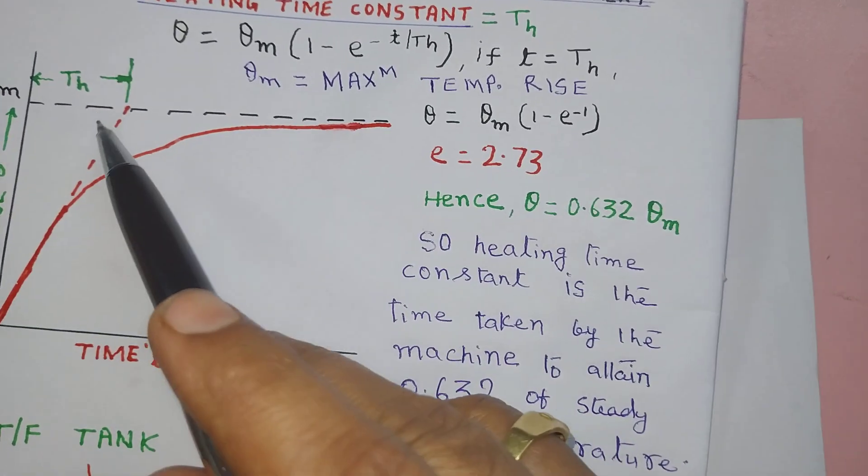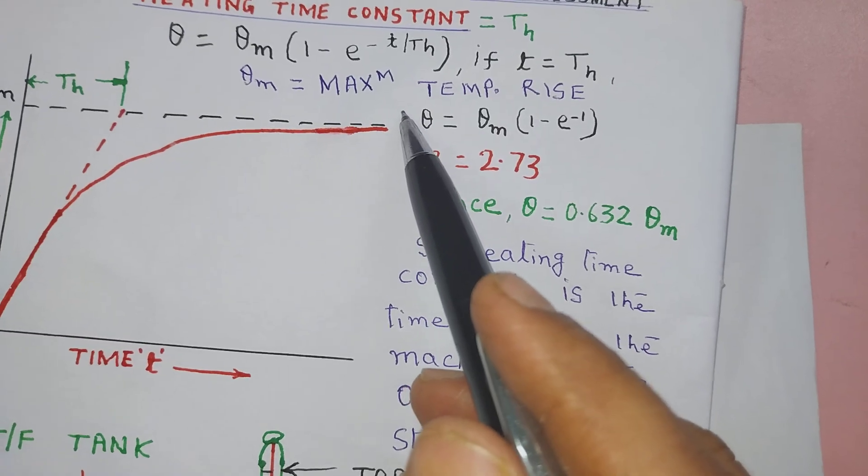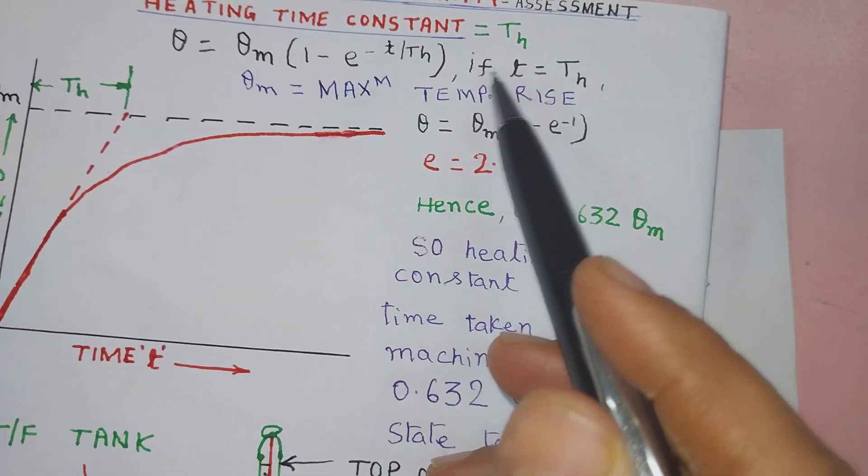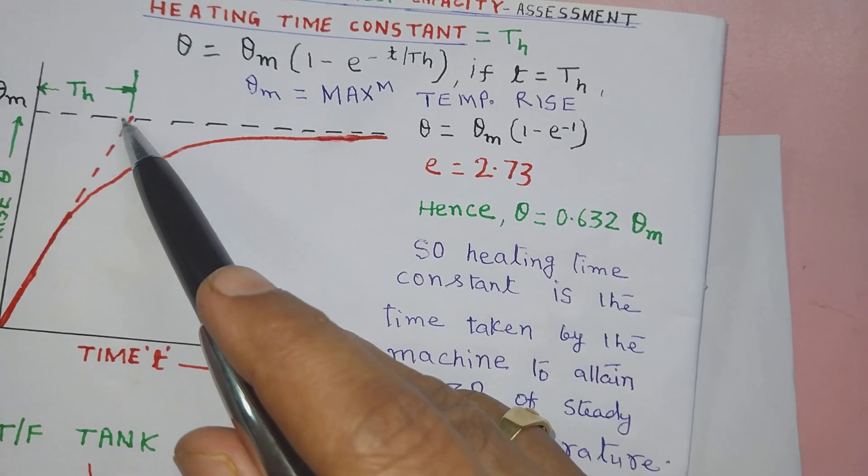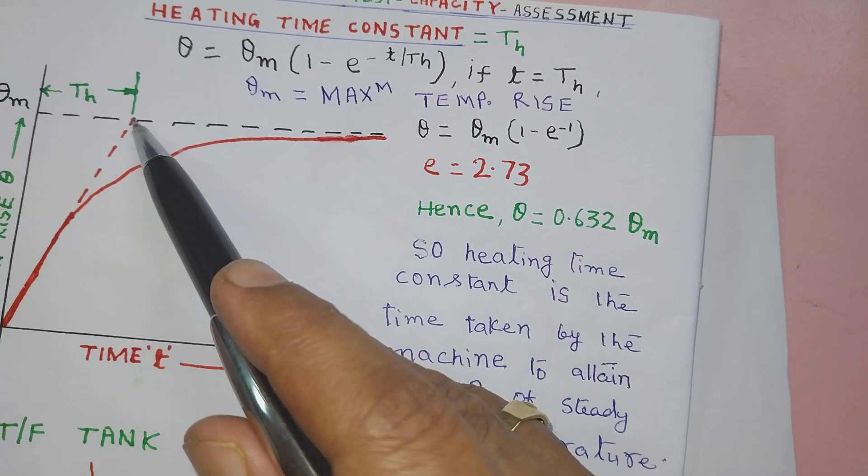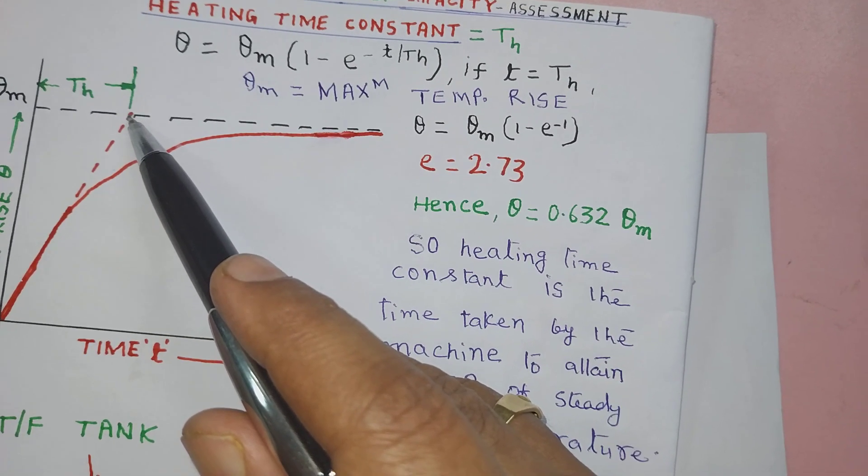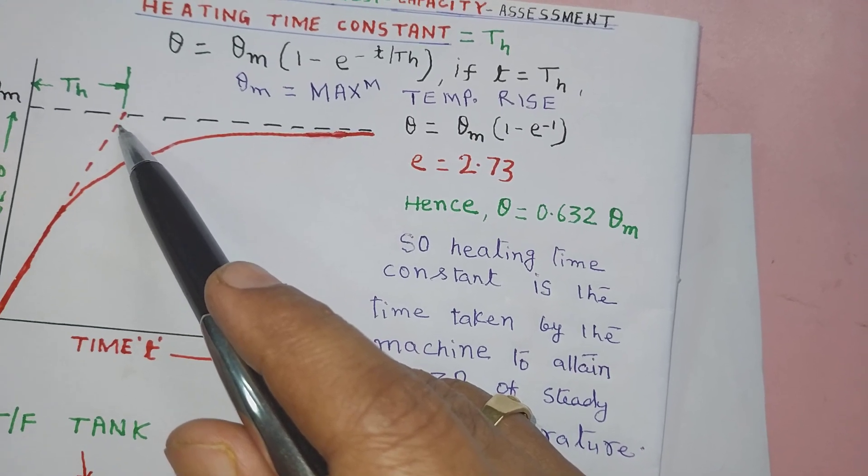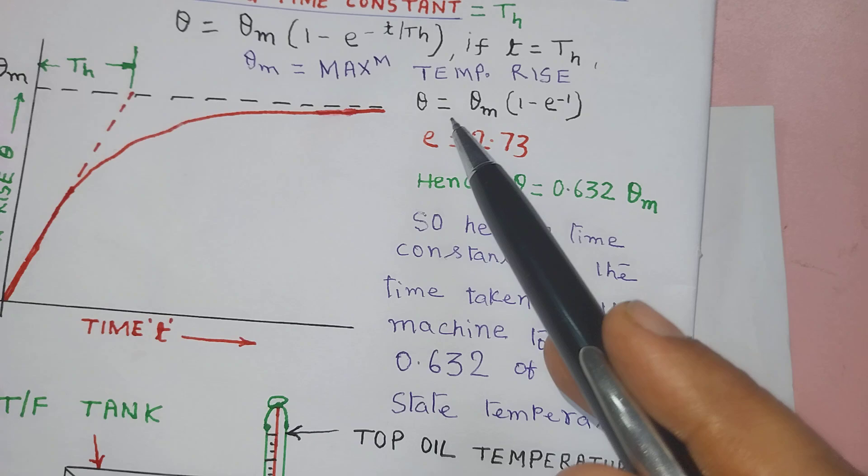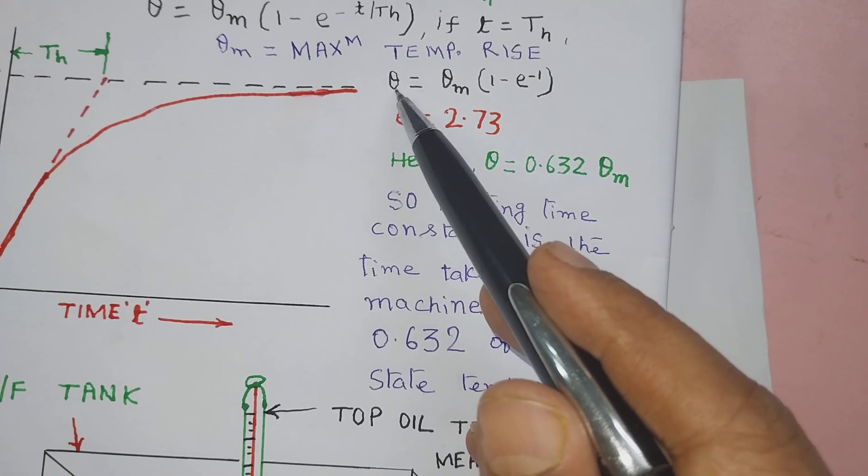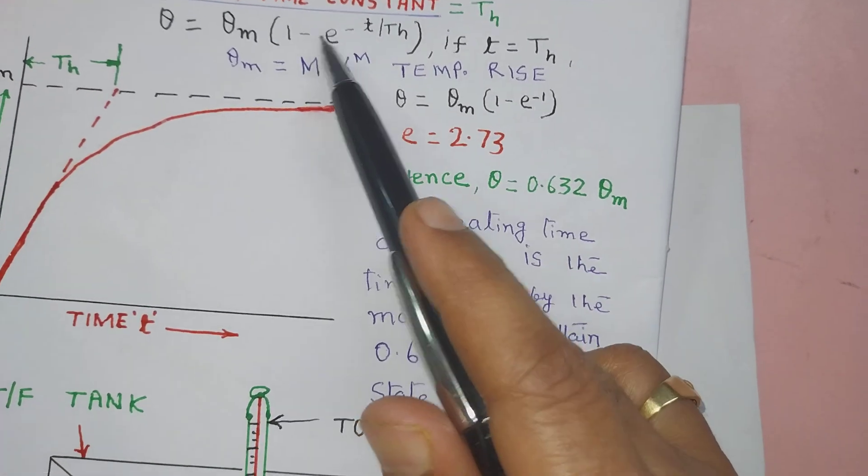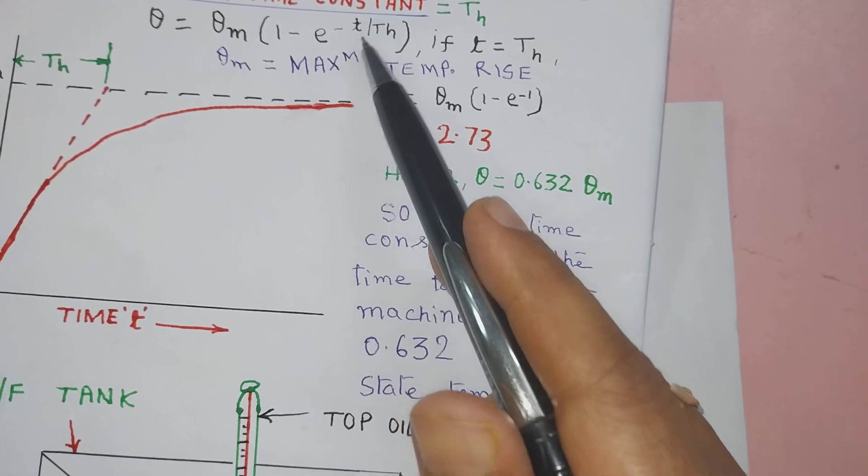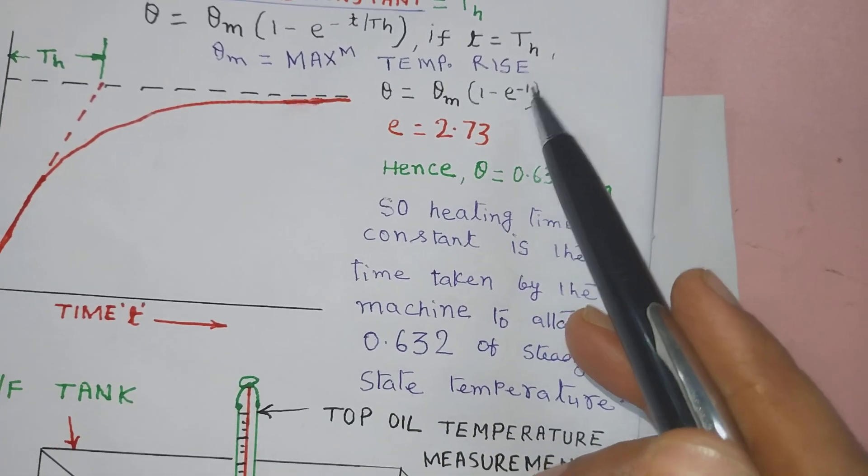Theta m is maximum temperature rise. If T is equal to TH, suppose this is the instant, this is heating time constant where we want to know the temperature. Then, how could we know it? Theta equals theta m times 1 minus, since T equals TH, 1 minus e to the power minus 1.